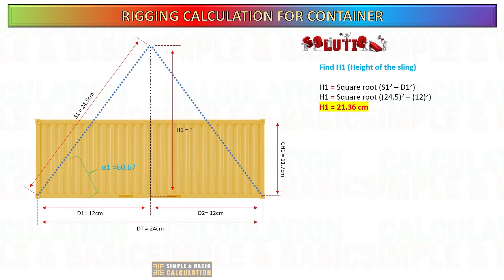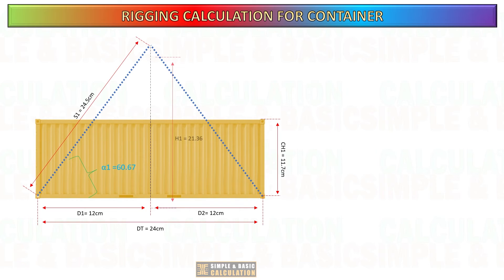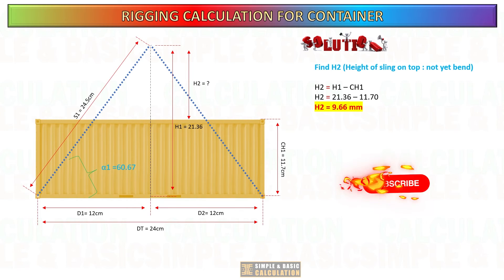Determine the vertical distance of the sling when it is in a straight position, as this information is important for calculating the other parameters in our computation. After determining the total height of the sling, you may proceed to compute the height of the sling above the container when it is in a vertical position. To get this, subtract the h1 from the vertical distance of lifting lug to top of container.